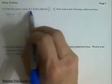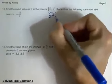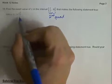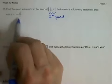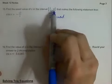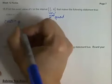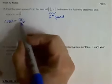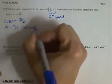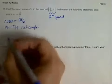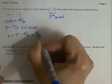In number 15, we're finding an exact value again. The interval between pi over 2 and pi is the second quadrant, and we want the angle where cosine equals negative square root of 2 over 2 — which makes sense since cosine is negative in the second quadrant. We first find the reference angle: cosine of theta equals positive square root of 2 over 2 in the first quadrant at 45 degrees, or pi over 4 in radians. Then the second quadrant angle is pi minus pi over 4, which gives us 3 pi over 4.